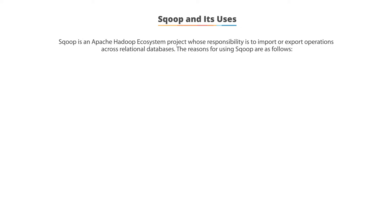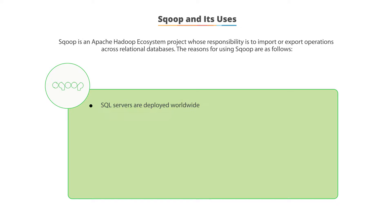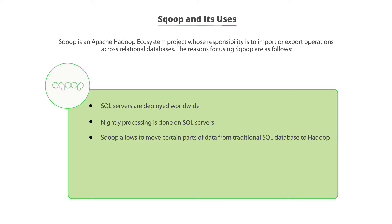Let's discuss the various reasons for using Sqoop. SQL servers are deployed worldwide — a SQL server is the primary way to accept data from a user. Nightly processing is being done on SQL servers and has been for years. Sqoop allows you to move data from traditional SQL databases into the Hadoop HDFS file system as Hadoop makes its way into enterprises. Transferring data using automated scripts is usually inefficient and time-consuming, so Sqoop is used in these cases.